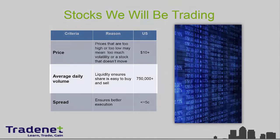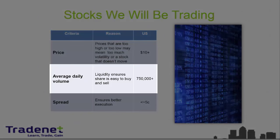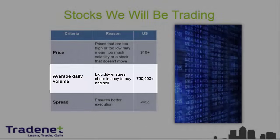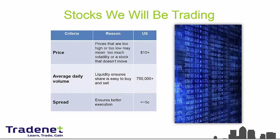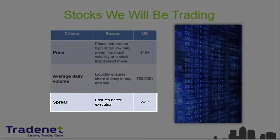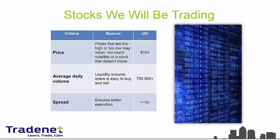The second criteria is the average daily volume. We will trade stocks that have an average volume of over 750,000 shares. That ensures liquidity, and that's very important for us traders. The third criteria is the spread. We will usually trade stocks where the difference between the bid and the ask is no more than $0.05.